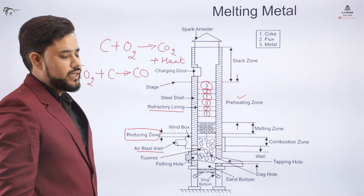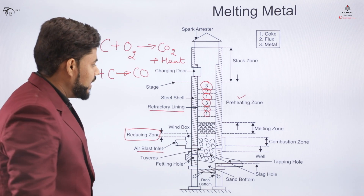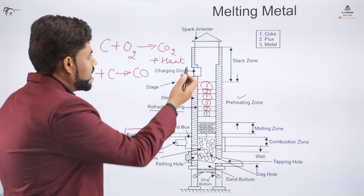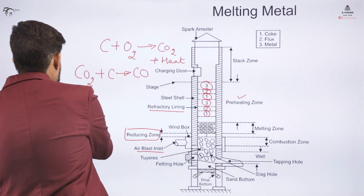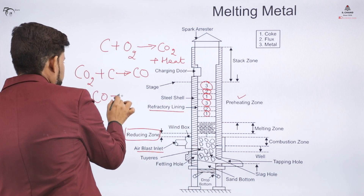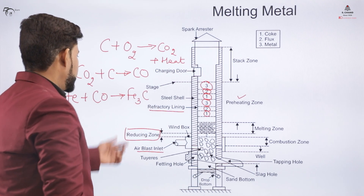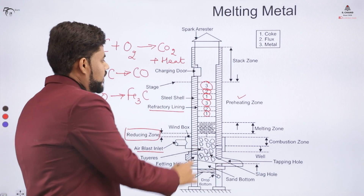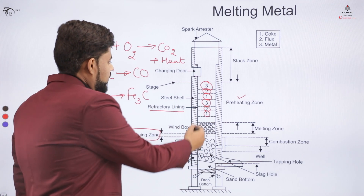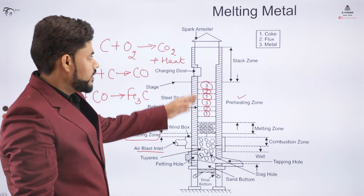Carbon monoxide acts as a reducing agent and is helpful in melting the metal. For example, when melting iron: Fe reacts with carbon monoxide to form Fe₃C. This melting takes place in the reducing zone because of the reducing agent produced from the coke already present in the furnace.